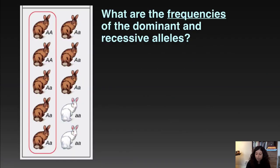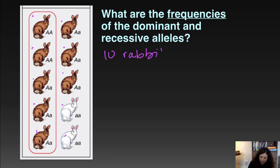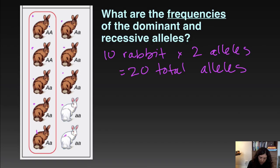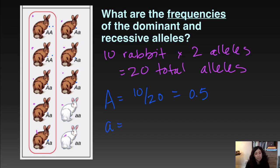Another practice problem: counting the individuals, we have 10 rabbits, and each rabbit has two alleles, so there are 20 total alleles. Counting the dominant big A alleles gives 10, so big A is 10 over 20, which is 0.5. And since big A plus little a must equal one, little a is also 0.5.